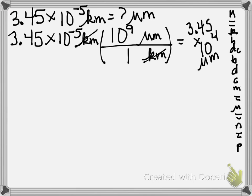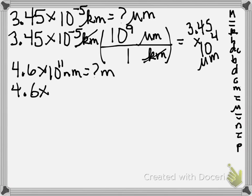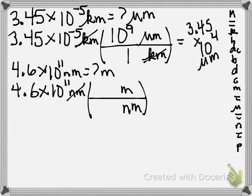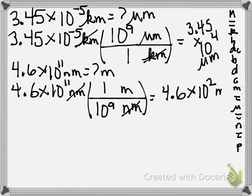Letter E: we have 4.6 times 10 to the 11th nanometers — we want to know how many meters that is. I start with 4.6 times 10 to the 11th nanometers. Nanometers need to be on the bottom. Meters go on the top. A meter is larger: 1, 2, 3, 4, 5, 6, 7, 8, 9 — 10 to the 9th. Which means I end up with 4.6 times 10 to the 2nd meters, or 460 meters.